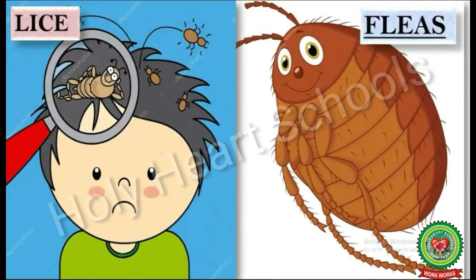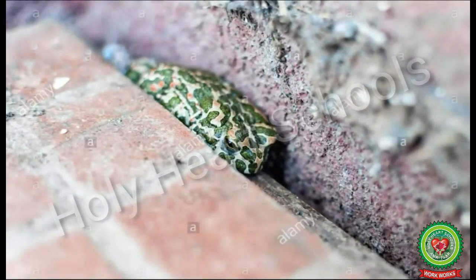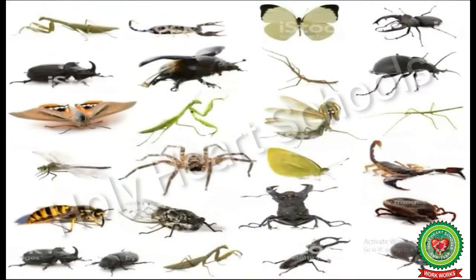For example, lice and fleas. Insects hide in many places like underneath the floor and in between the walls. In this lesson we will learn about the insects that are found in Europe.